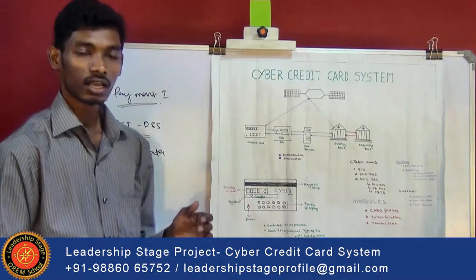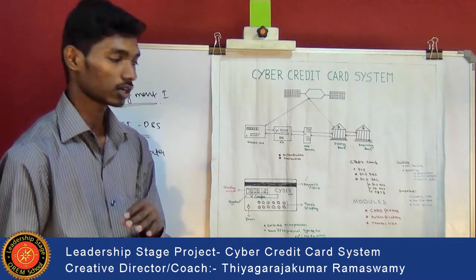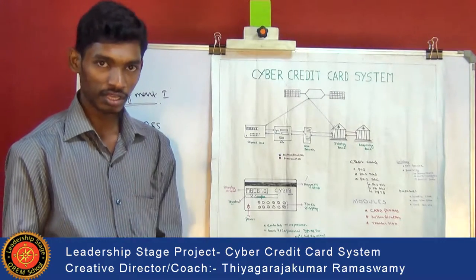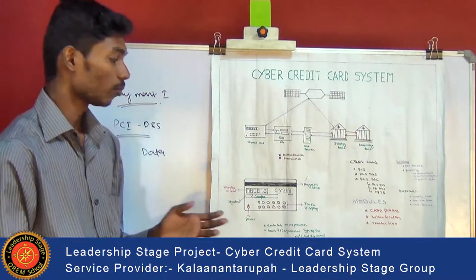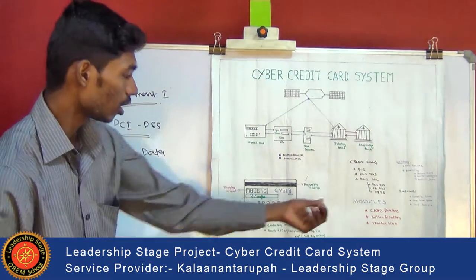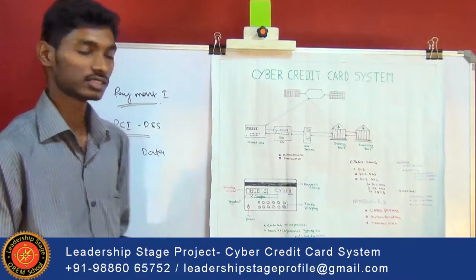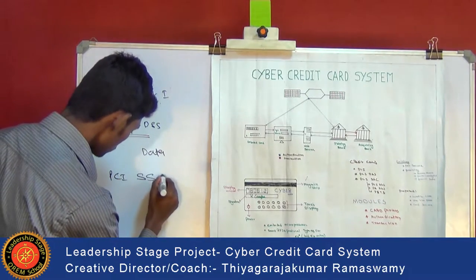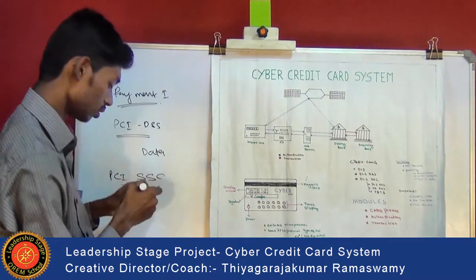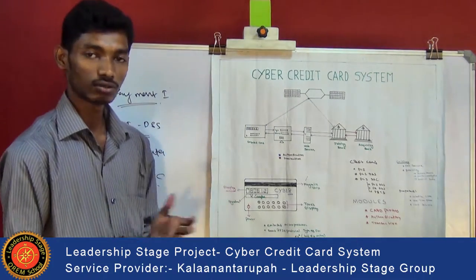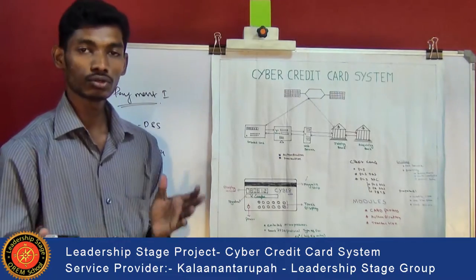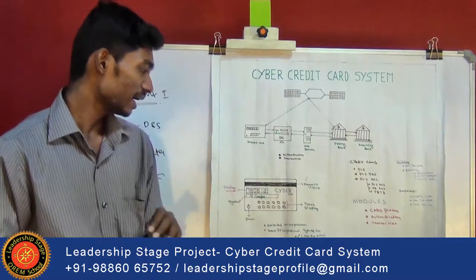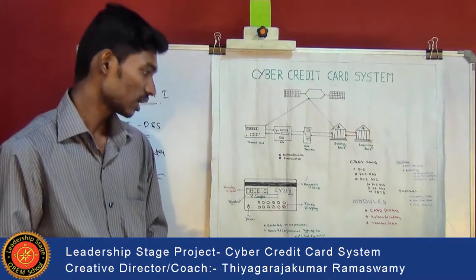In 2006, the world's five major payment card companies — American Express, JCB, Discover, MasterCard, and Visa — combined to create the PCI SSC, the Payment Card Industry Security Standard Council. This council is mainly used to manage PCI DSS, PA DSS, and PTS.